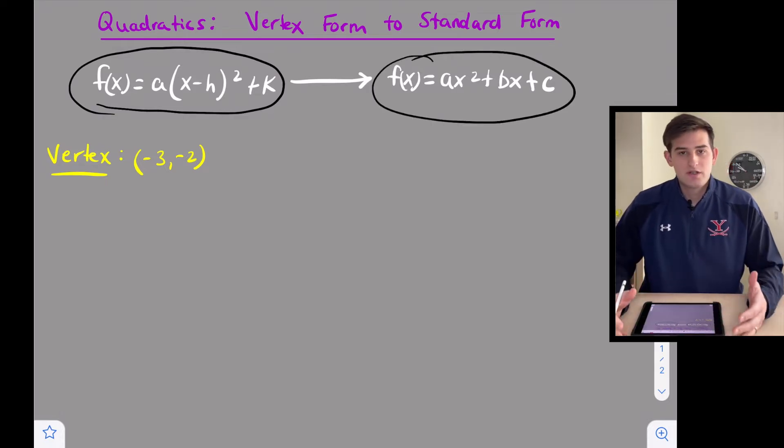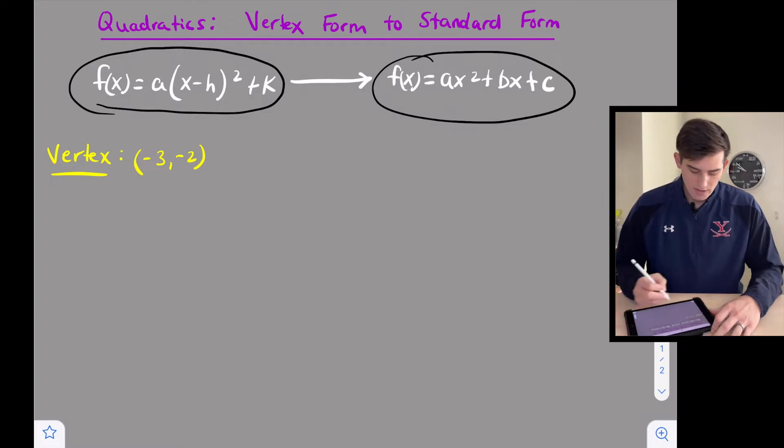So we're going to start off basically with just the vertex of our parabola. We're going to plug that into vertex form and then we'll simplify it to get it to standard form. So let's take a look. So our vertex is (-3, -2).